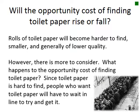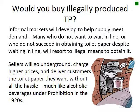The opportunity cost of finding toilet paper will rise. Rolls will become harder to find, smaller, and generally of lower quality. Since toilet paper is scarce, people will have to wait in line to obtain it. Informal markets will also develop — many who don't want to wait in line will resort to illegal means to obtain it. Sellers will go underground, charge higher prices, and deliver the product without the hassle, much like alcoholic beverages under Prohibition in the 1920s.